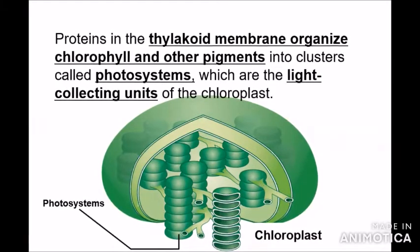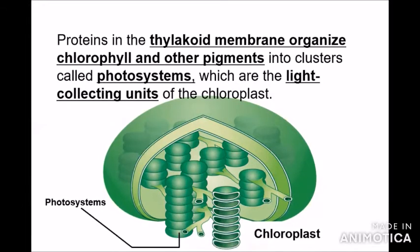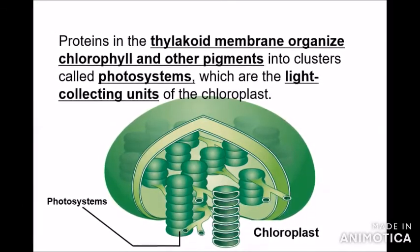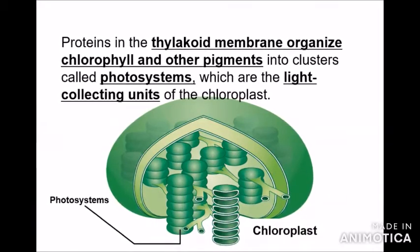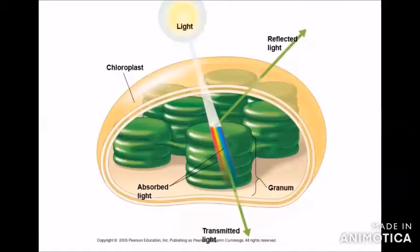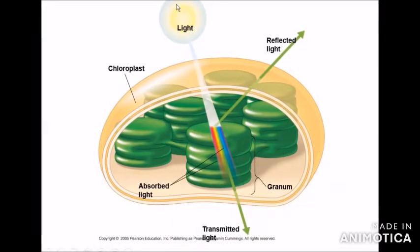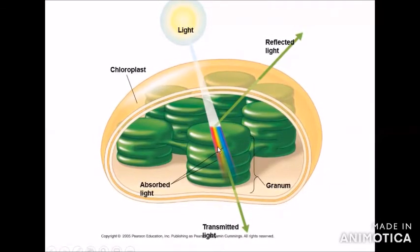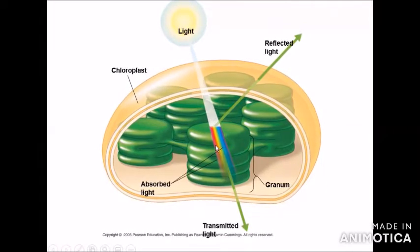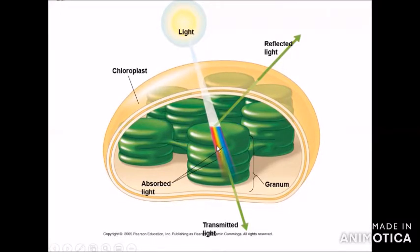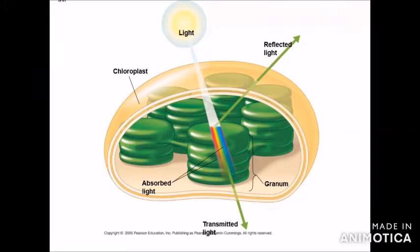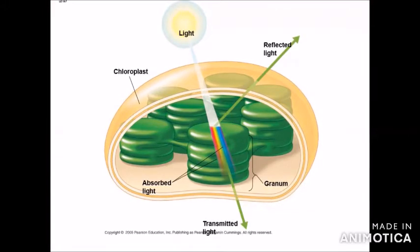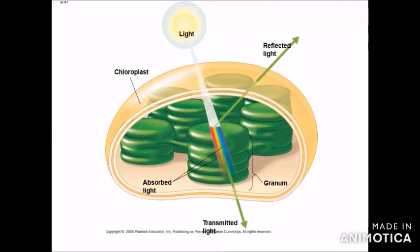Proteins in the thylakoid membrane organize chlorophyll and other pigments into clusters called photosystems, which are the light-collecting units of the chloroplasts. Light is a source of energy and the unit is the photon. The photon is absorbed by the thylakoid membrane where the light-dependent reaction of photosynthesis takes place. Red and blue colors are absorbed by chlorophyll molecules, while green and yellow colors are reflected from the surface.